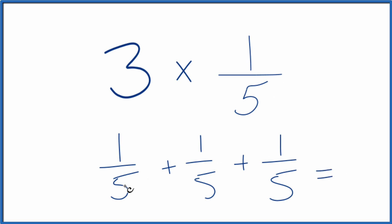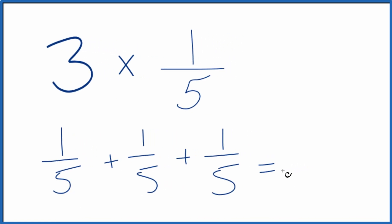And then when you have fractions, if the denominator is the same, you just keep that the same and you add the numerators. One plus one plus one equals three. So three times one-fifth equals three-fifths.